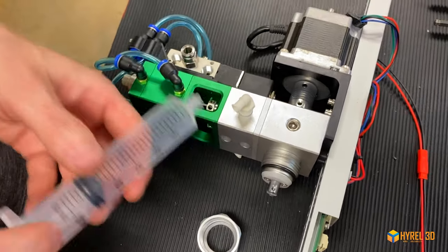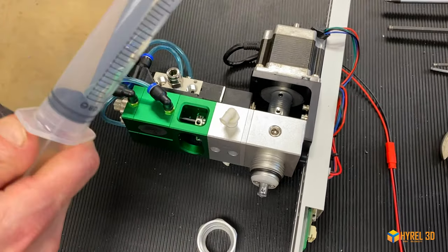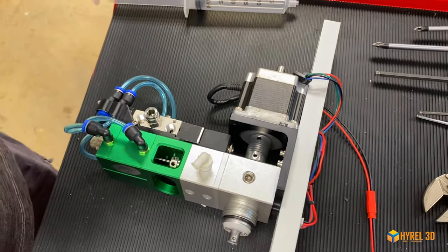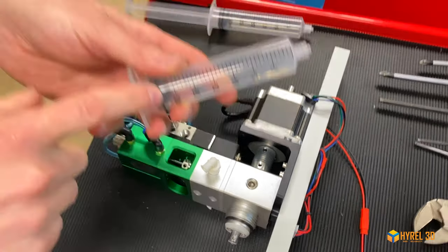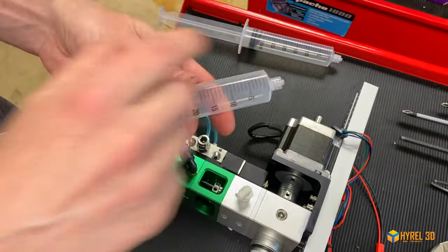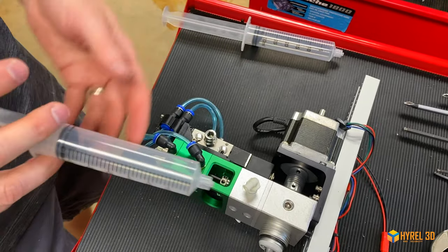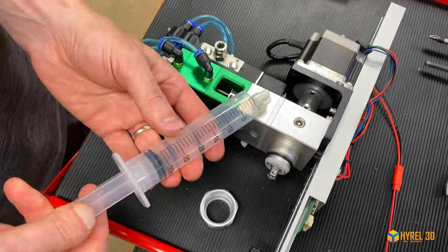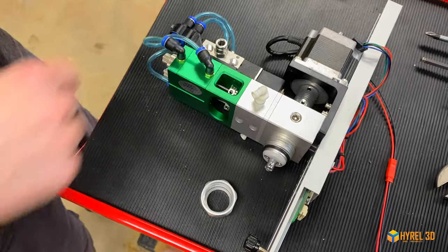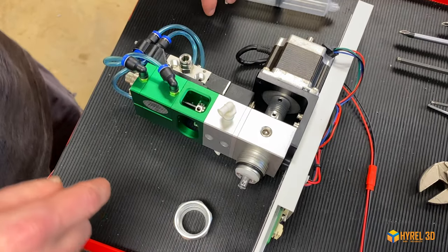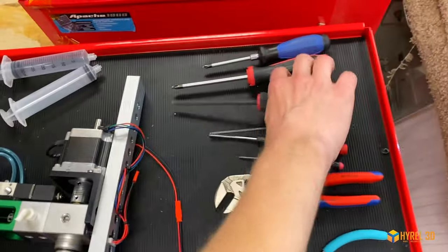Keep in mind if you're using acetone or something like that, it's probably going to eventually dissolve the rubber inside a standard syringe, so you've got to work fast before that happens or use a metal syringe. Use whatever delivery method you have available for flushing the solvent through.